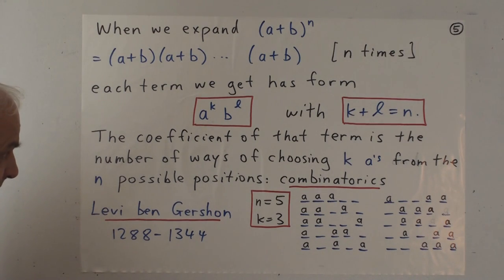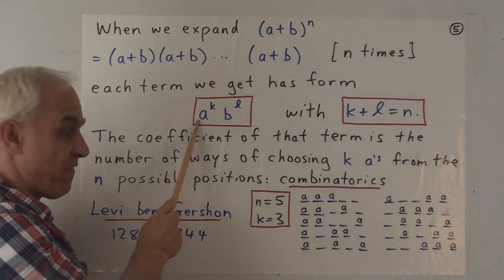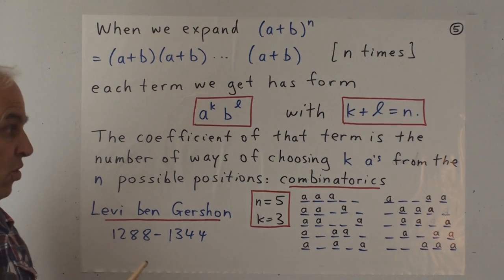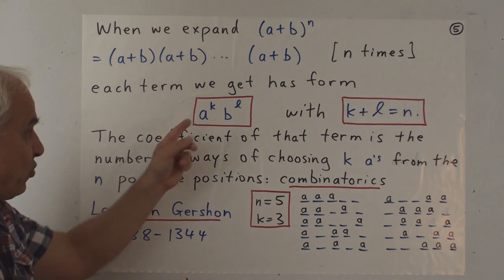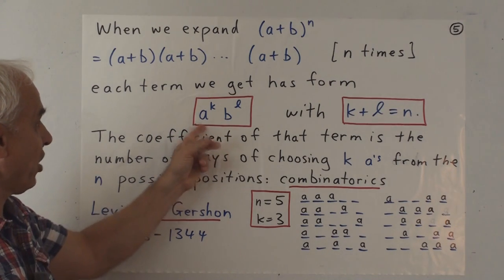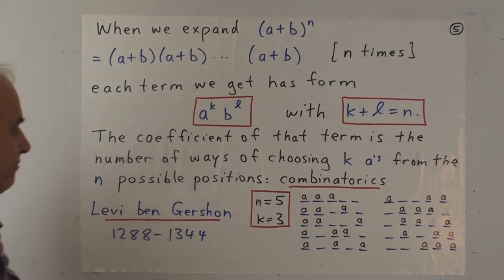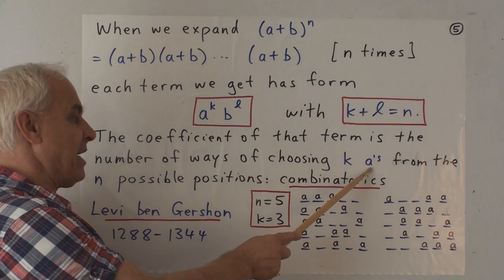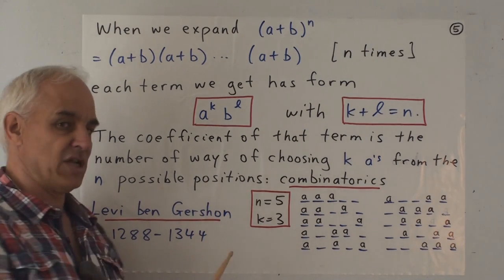So the question is really, what is the coefficient that appears in front of this term in the expansion? Or in other words, how many times do we get this particular term when we expand this all out?